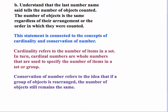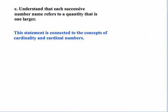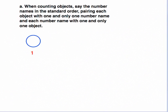The second statement in Part B is about conservation of number. This refers to the idea that if we have a group of objects and we rearrange them, the number of objects remains the same. Part C deals with both cardinality and cardinal numbers — specifically the idea that as you state successive numbers, the quantity becomes one larger.